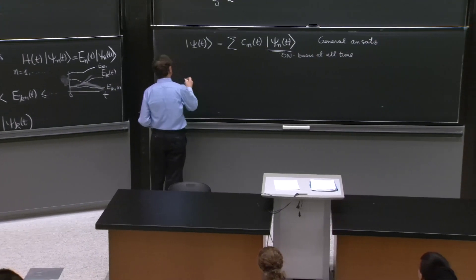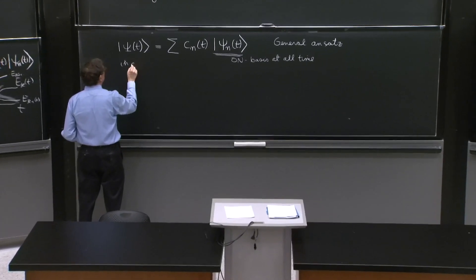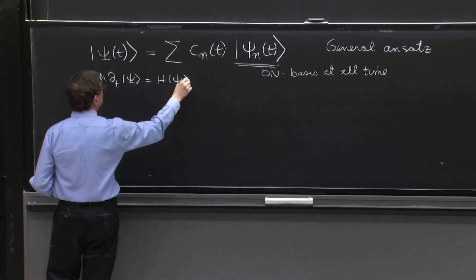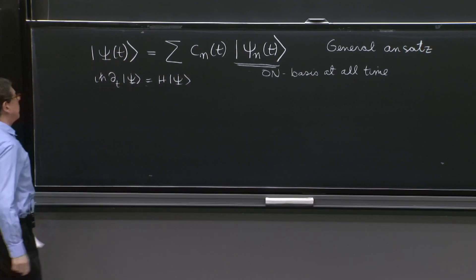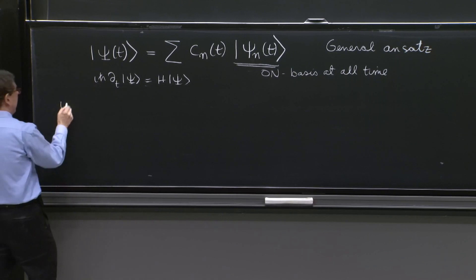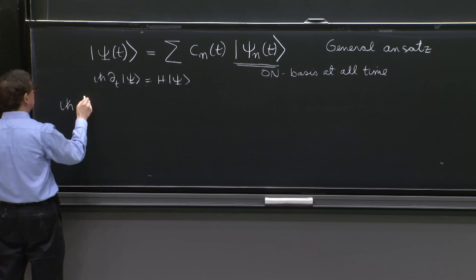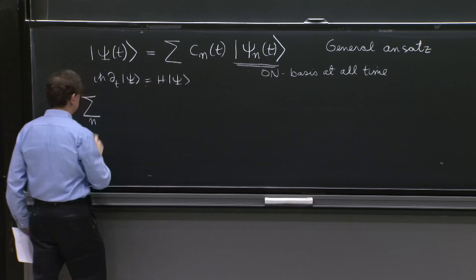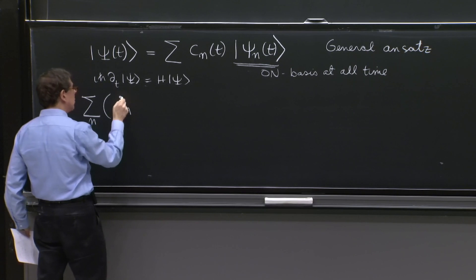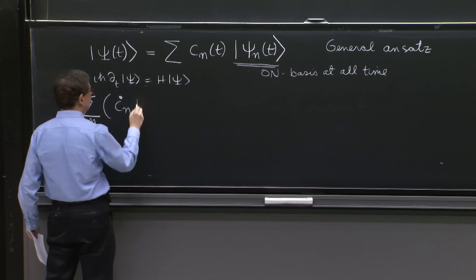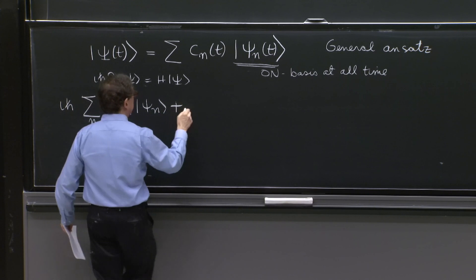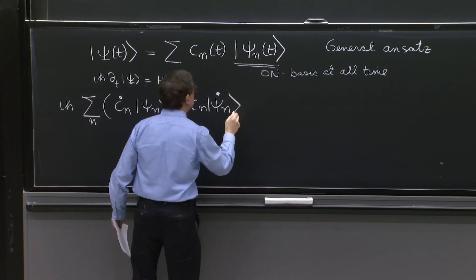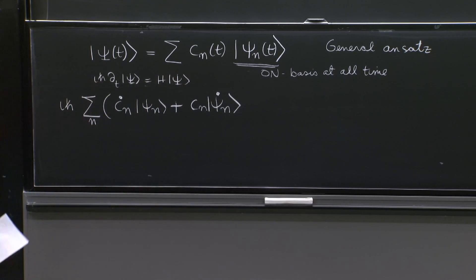So the Schrödinger equation is i h bar d dt of psi is equal to h psi. So let's look at what it gives us here. We'll have i h bar sum over n, and I have to differentiate this state. So I get cn dot, dot for time derivatives, psi n plus cn psi n dot. This is a time derivative of the state.